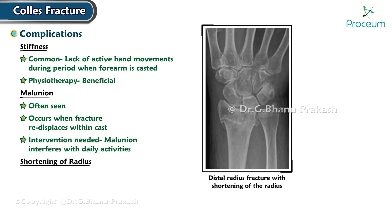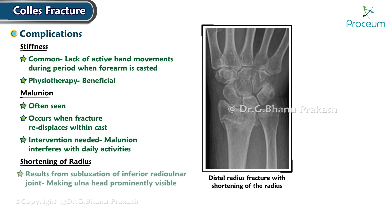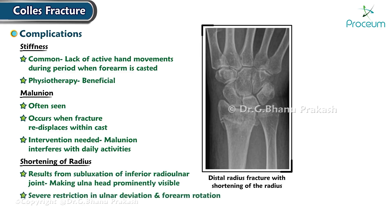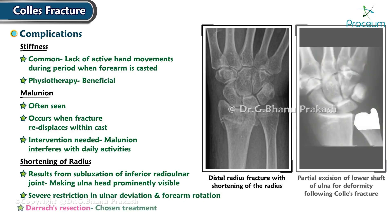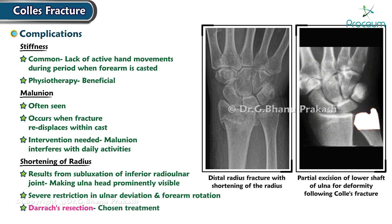Shortening of the radius results from subluxation of the inferior radio-ulnar joint, making the ulnar head prominently visible. It leads to severe restriction in ulnar deviation and forearm rotation. A surgical procedure called Darrach's resection is typically the chosen treatment in these cases.